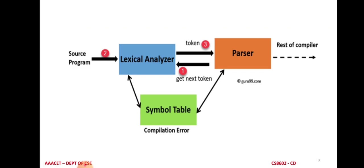The information stored about an identifier includes its name, type, and address. For example, consider the statement 'a = 5;'. Here, 'a' is an identifier, and its value 5 is stored at some memory address, say 1000. So the symbol table maintains this information for the identifier 'a'.